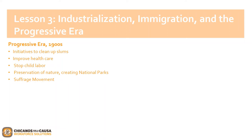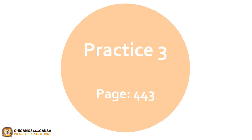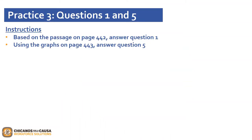Now that we have learned about industrialization, immigration, and the Progressive Era, let's answer some questions in Practice 3, found on page 443. Based on the passage on page 442, answer question 1. Using the graphs on page 443, answer question 5. When you're ready to start, click play.